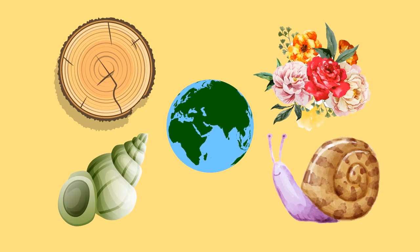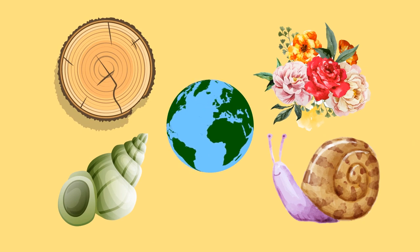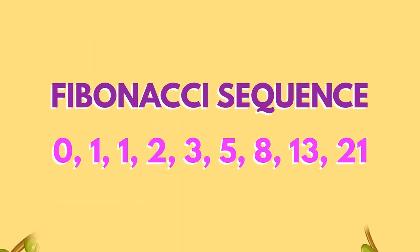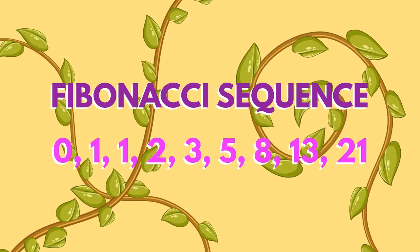Sequences allow us to find patterns in the world so that we can understand it more and predict behaviour. The Fibonacci sequence can be found in nature and is closely related to the golden ratio.